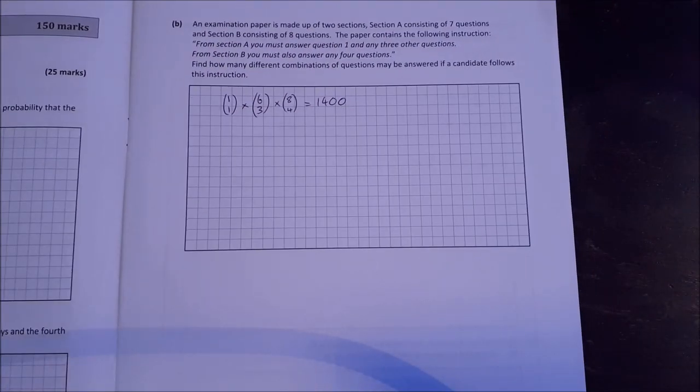Part B. An examination paper is made up of two sections. Section A has seven questions. Section B has eight questions. The paper contains the following instruction. From section A you must answer question one and any three other questions. From section B you must answer any four questions. So how many different combinations can be answered?